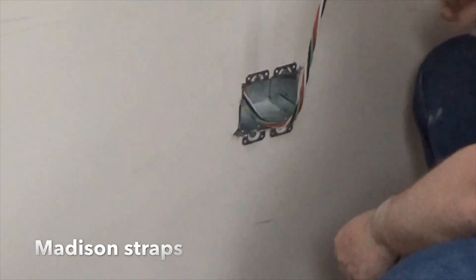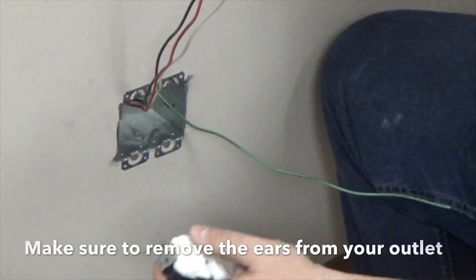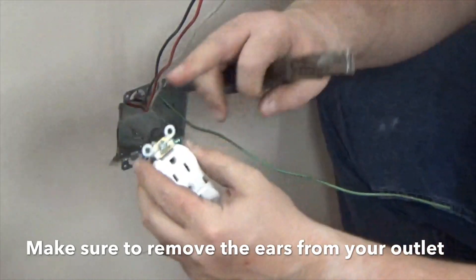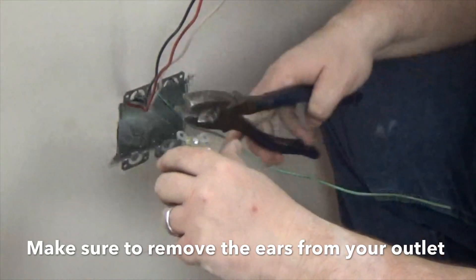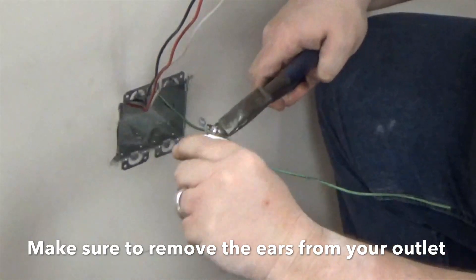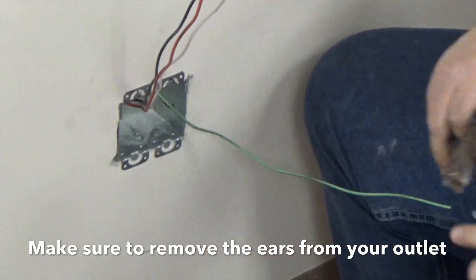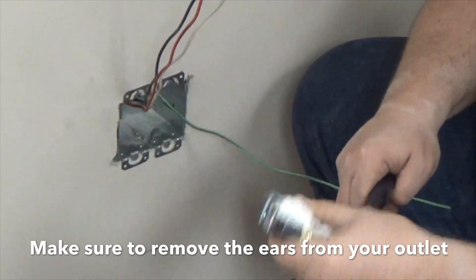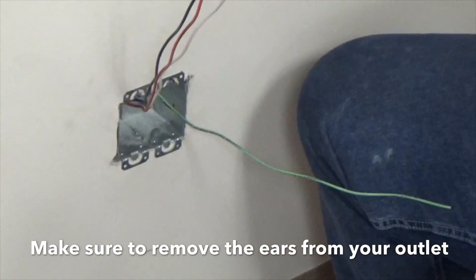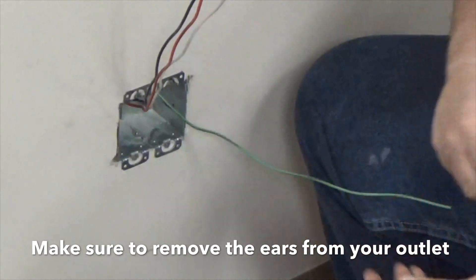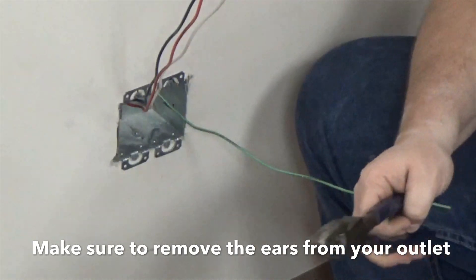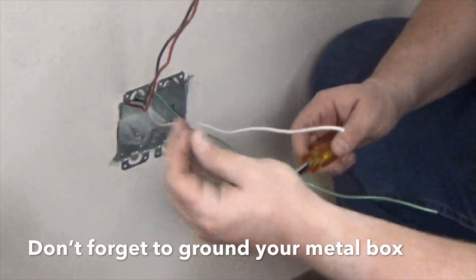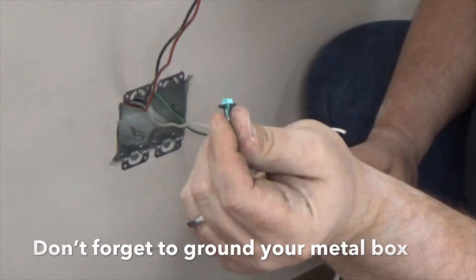Okay, before I connect my outlets, in an old work box, you need to take the ears off of the outlet. You just take them and twist them off. And then your outlet looks like so. Metal old work box, make sure you put your green number 10 grounding screw in.